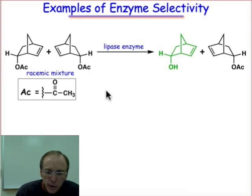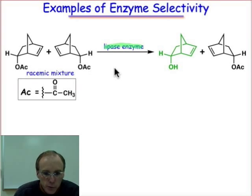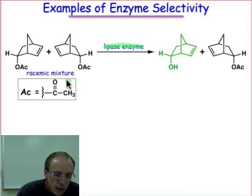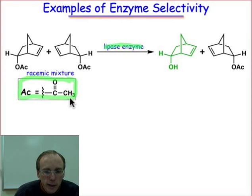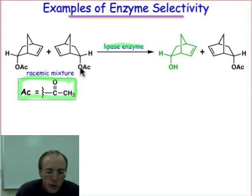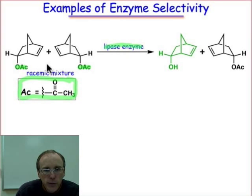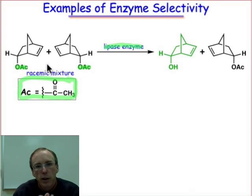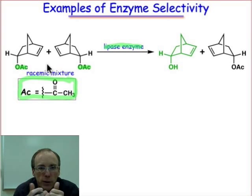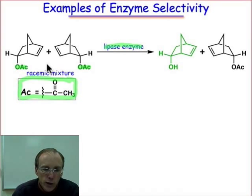We're using a lipase enzyme to catalyze the hydrolysis of ester groups, and the ester groups being hydrolyzed are these acetate groups, abbreviated AC. So there's an OAC group there and an OAC group there. These two substrates look remarkably similar to one another, and at first glance you would guess that if one of them is going to react, certainly the other one would as well.